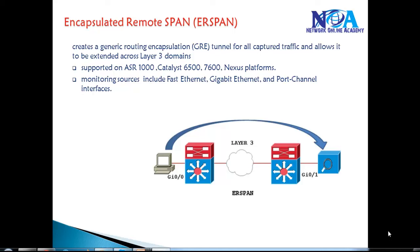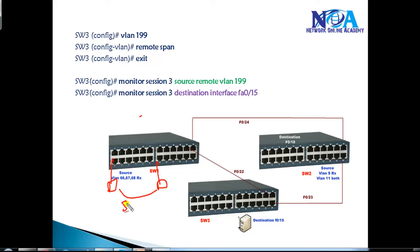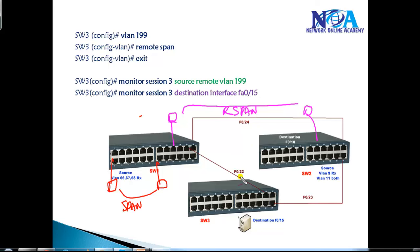In this video we'll talk about Encapsulated Remote SPAN. Getting back to the previous SPAN concepts we discussed: we have seen local SPAN, where source and destination are on the same switch. If your source is on one switch and destination is on a different switch, we call it Remote SPAN. Both SPAN and Remote SPAN work within the same local area network, within the same Layer 2 network.